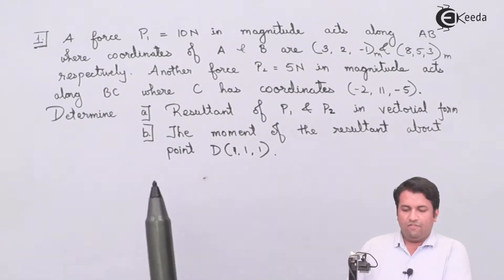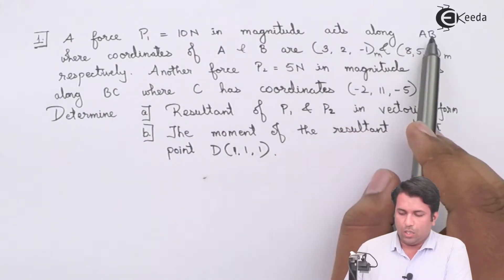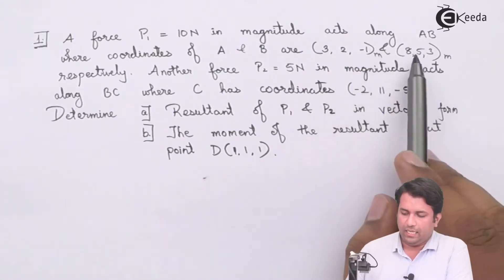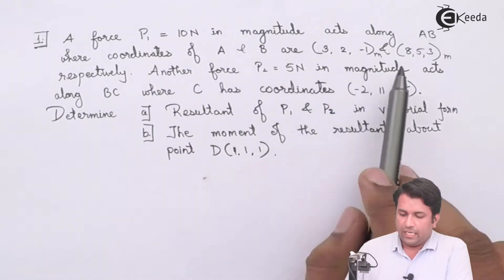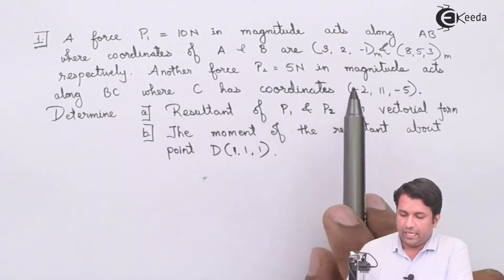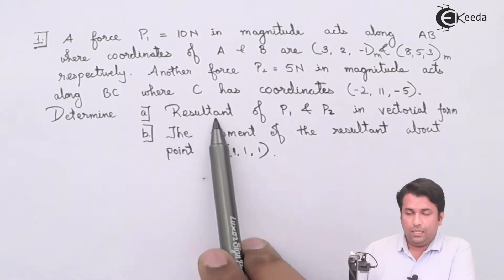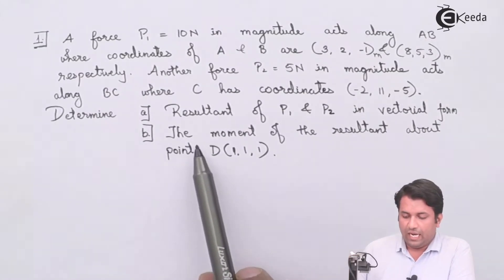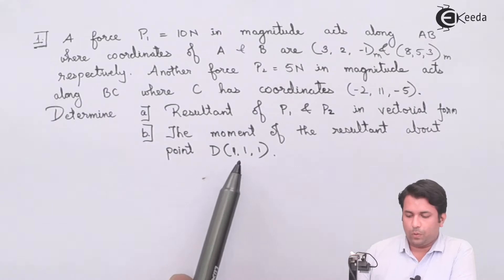In this example, I have a force P1 of 10 N in magnitude acting along AB. The coordinates of A are (3, 2, −1) and B are (8, 5, 3). Another force P2 of 5 N is acting along BC, where the C coordinates are (−2, 11, −5). I need to find the resultant of these two forces in vectorial form, and then find the moment of this resultant force with respect to point B.